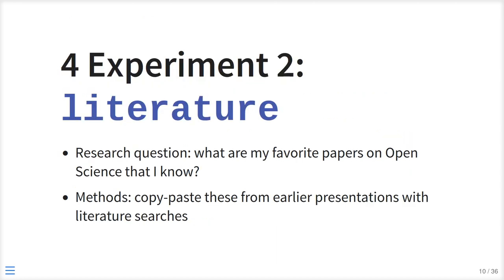The second part of the experiment is about literature I already knew, because I've obviously been searching the literature more often. The research question is: what are my favorite papers on open science that I already know? I copied those from earlier presentations I gave myself.